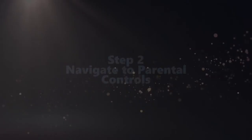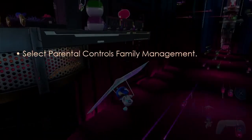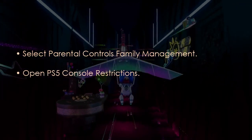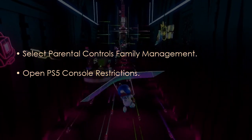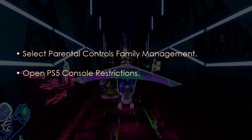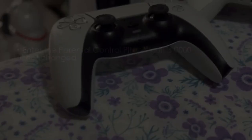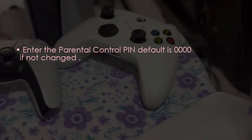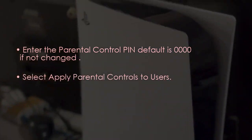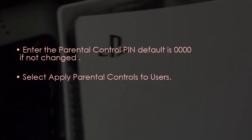Now navigate to Parental Controls from the main Settings page. Select Parental Controls and Family Management, then open PS5 Console Restrictions. Authenticate your credentials — enter the parental control PIN, the default is 0000 — and then select Apply Parental Controls to Users.